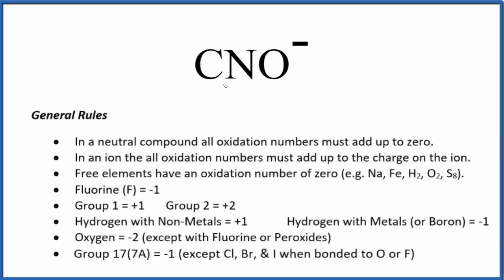Let's find the oxidation numbers for each element here at CNO⁻. We see we have this negative charge here, that means we have an ion. When we have an ion, all of the oxidation numbers are going to add up to the charge on the ion. So all of the oxidation numbers here on the carbon, nitrogen, and oxygen, they're going to add up to minus one.